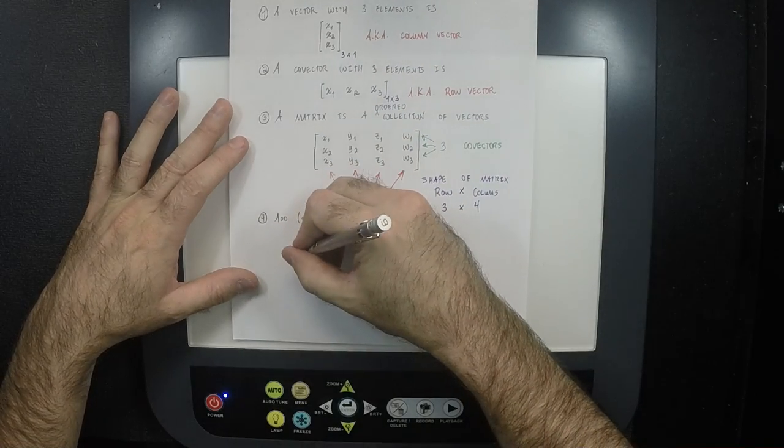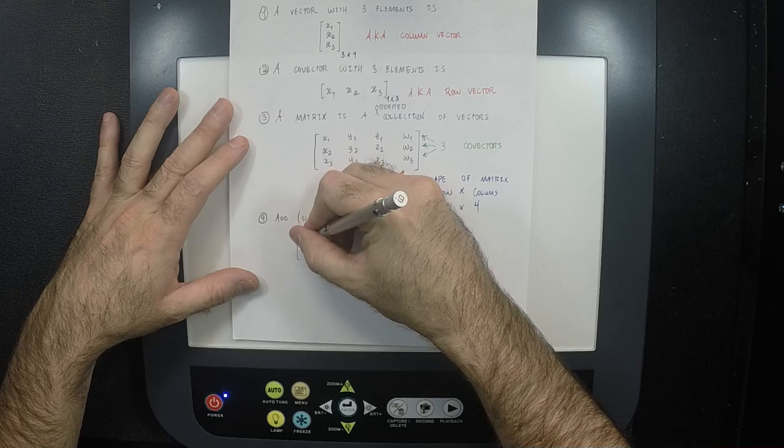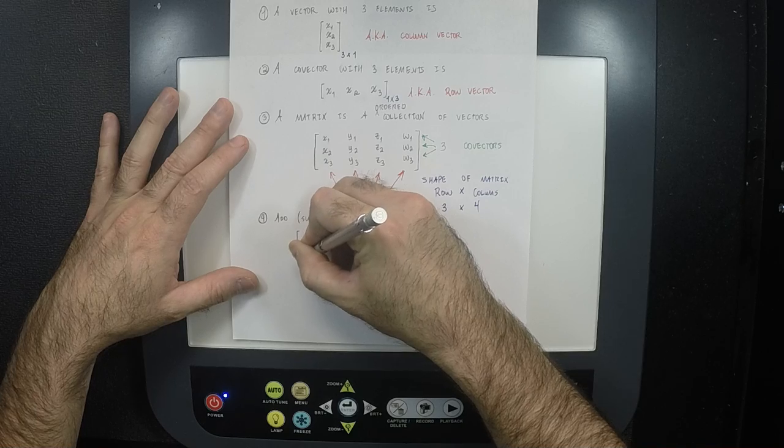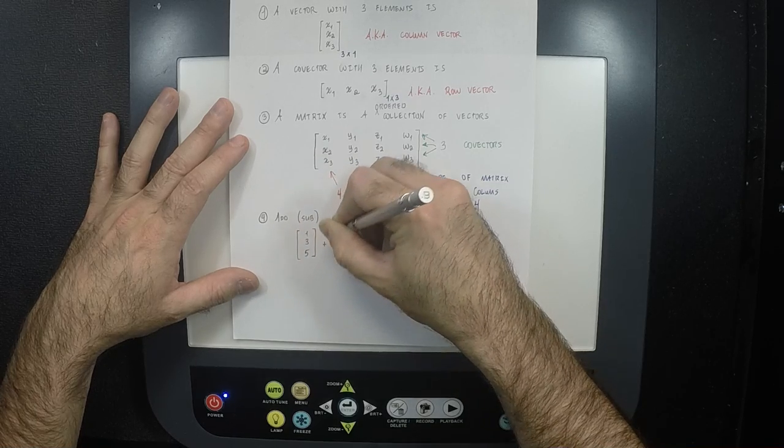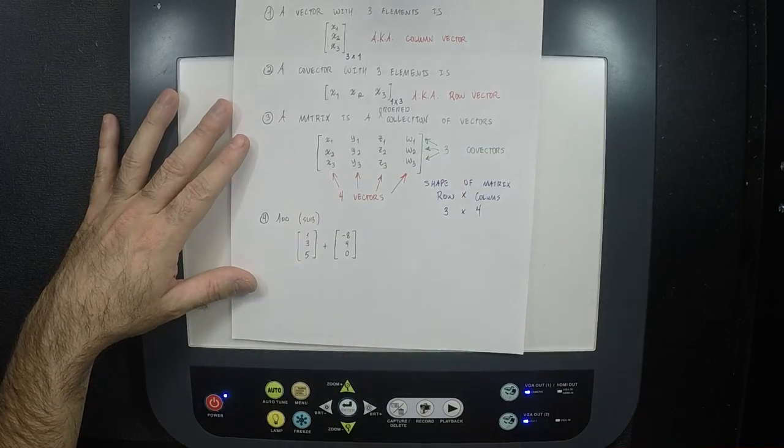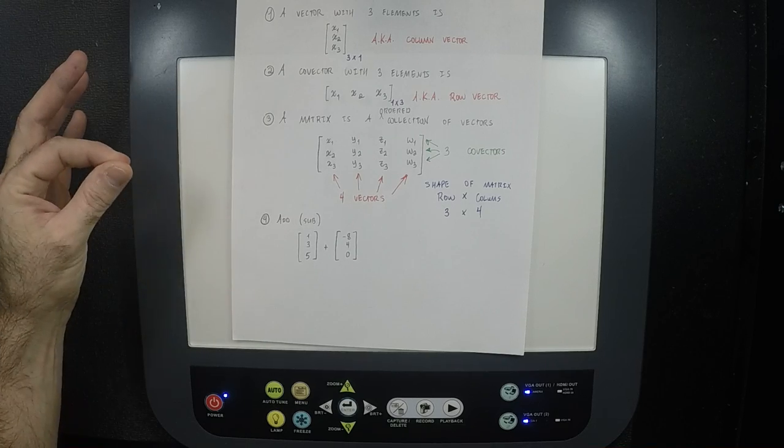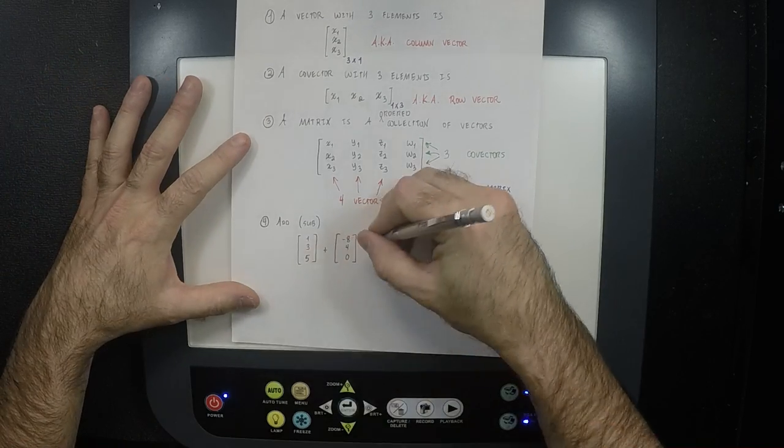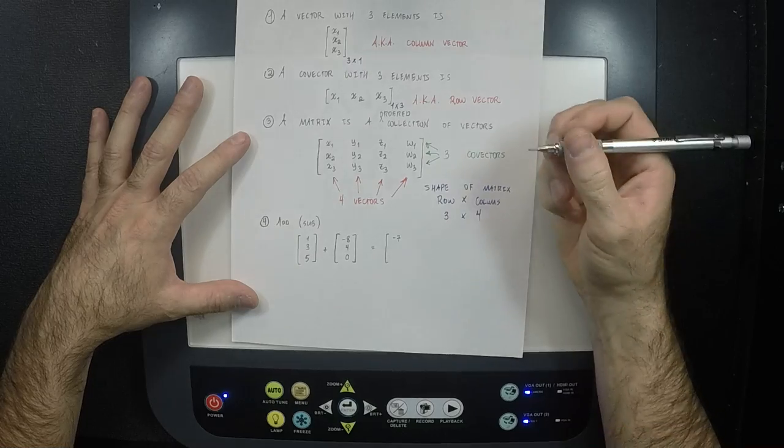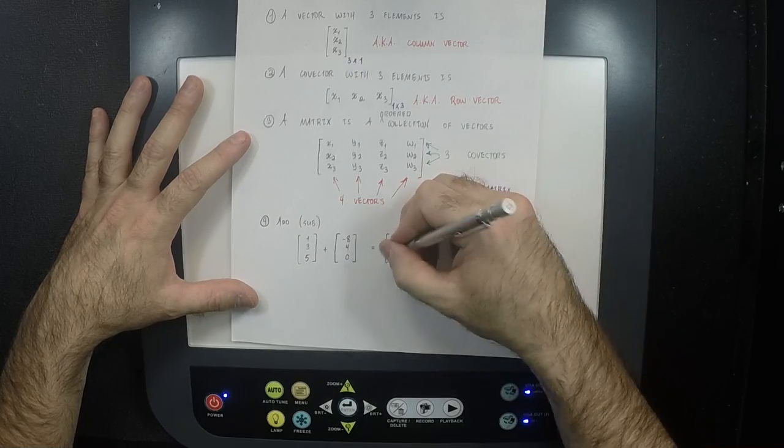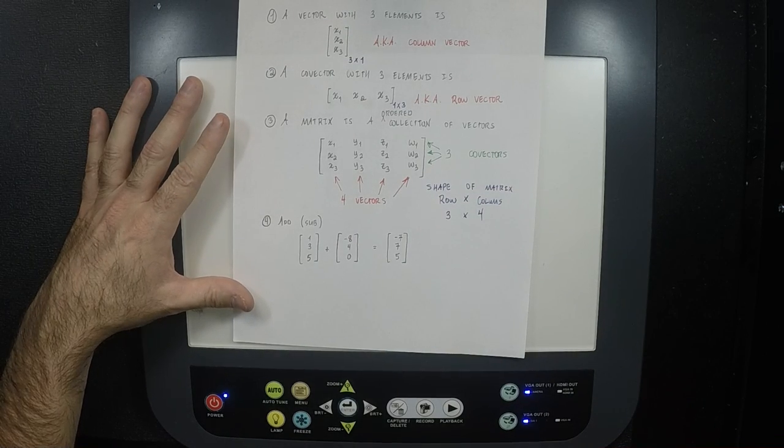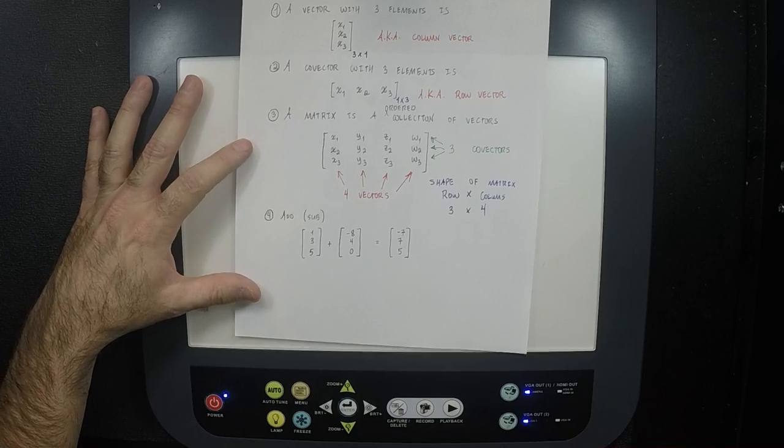So, for example, I could say, here's a vector, one, three, five, say. And then to that we can add negative eight, four, zero. And then it adds in exactly the way you might think it does. You add the first components together, the second components together, and the third components together. So, what would the first component be? Negative seven, and then the second? Seven, and the third? Five. Five. Okay, nothing really surprising there. So, you can add vectors and co-vectors and matrices together so long as they have the same shape.